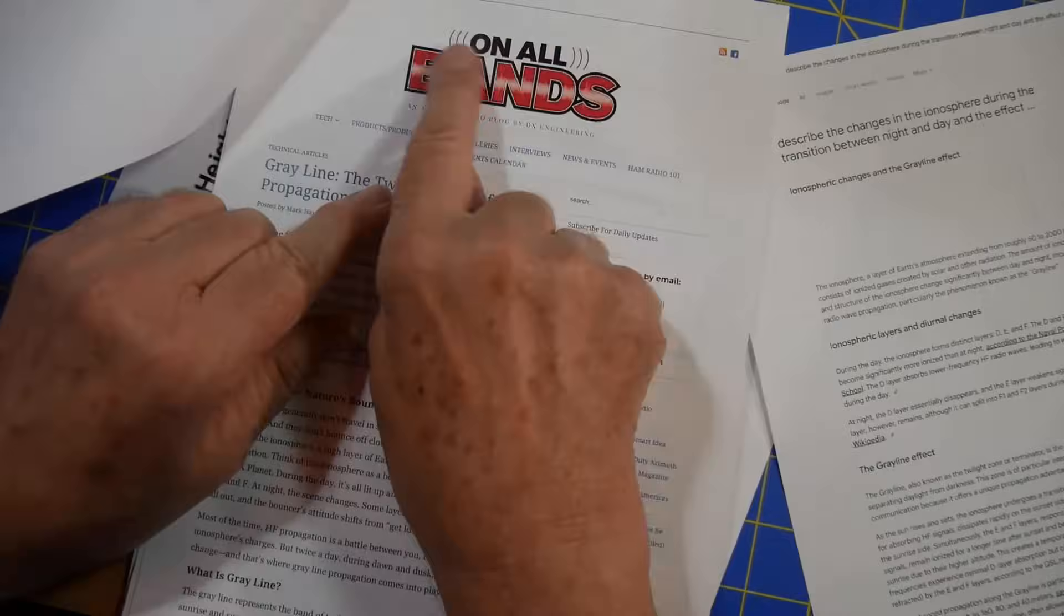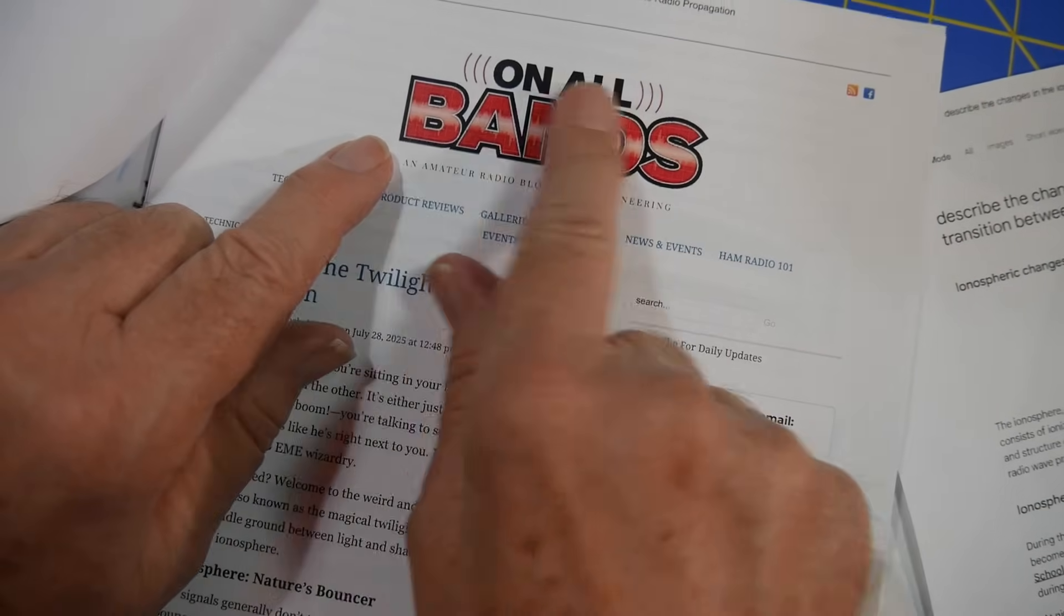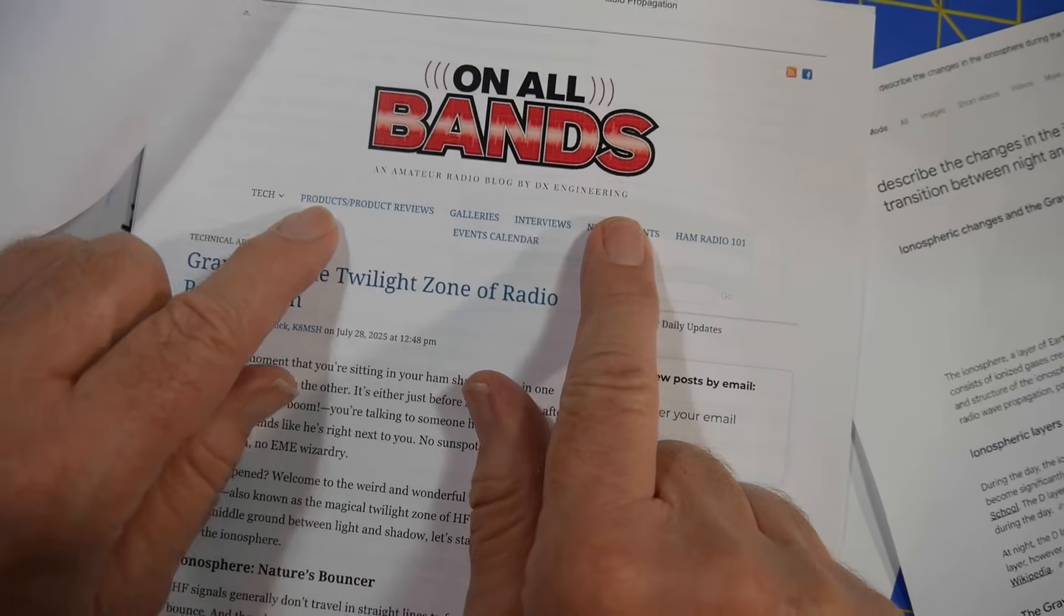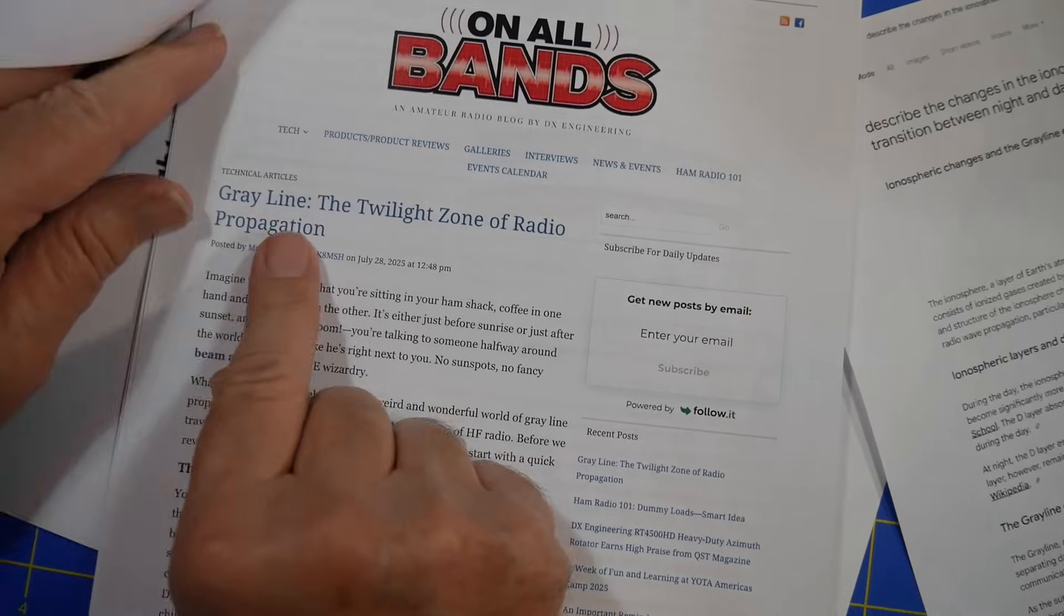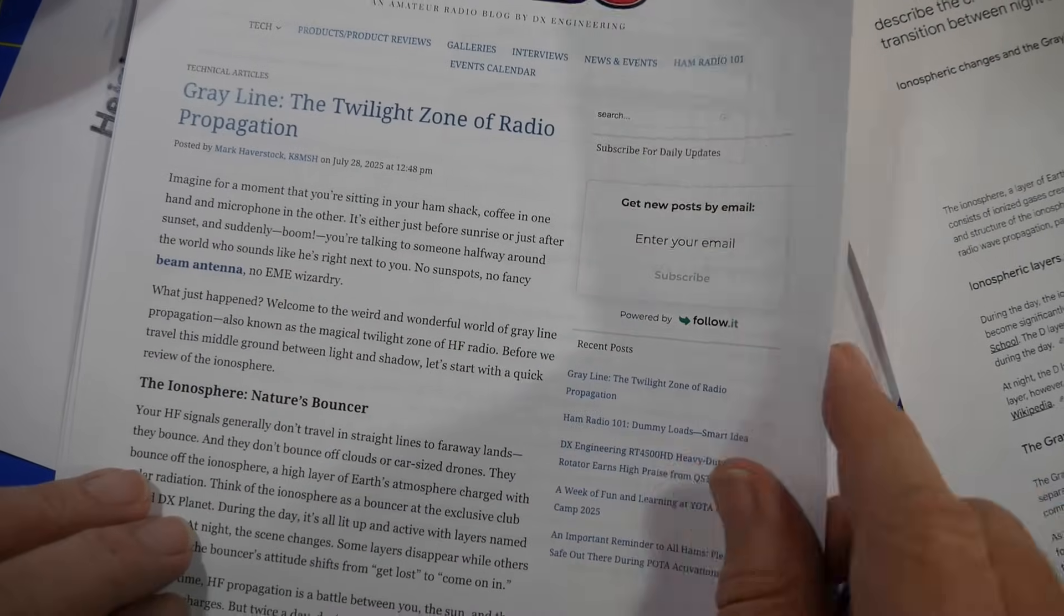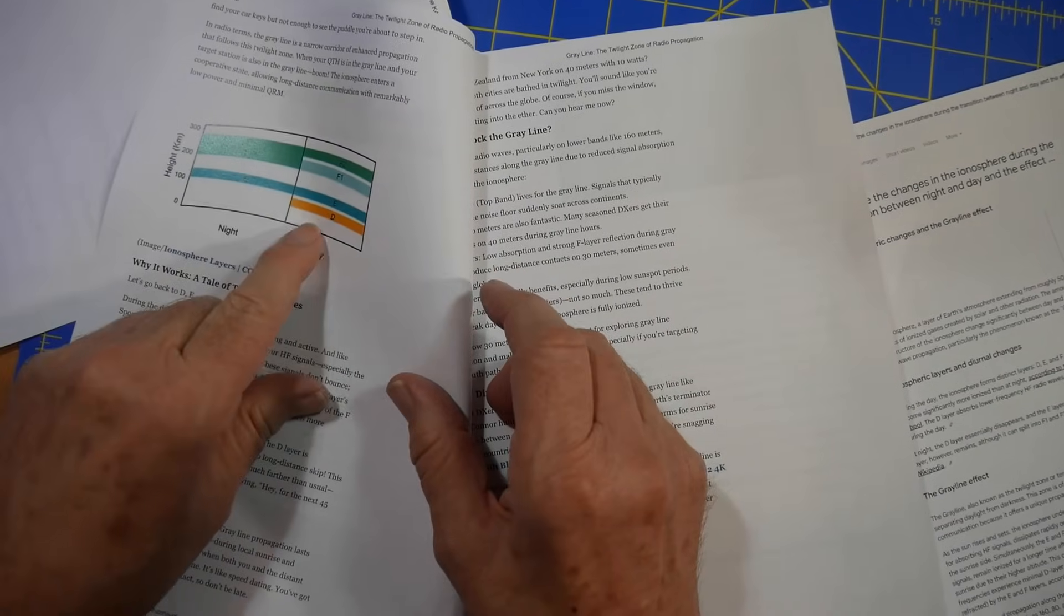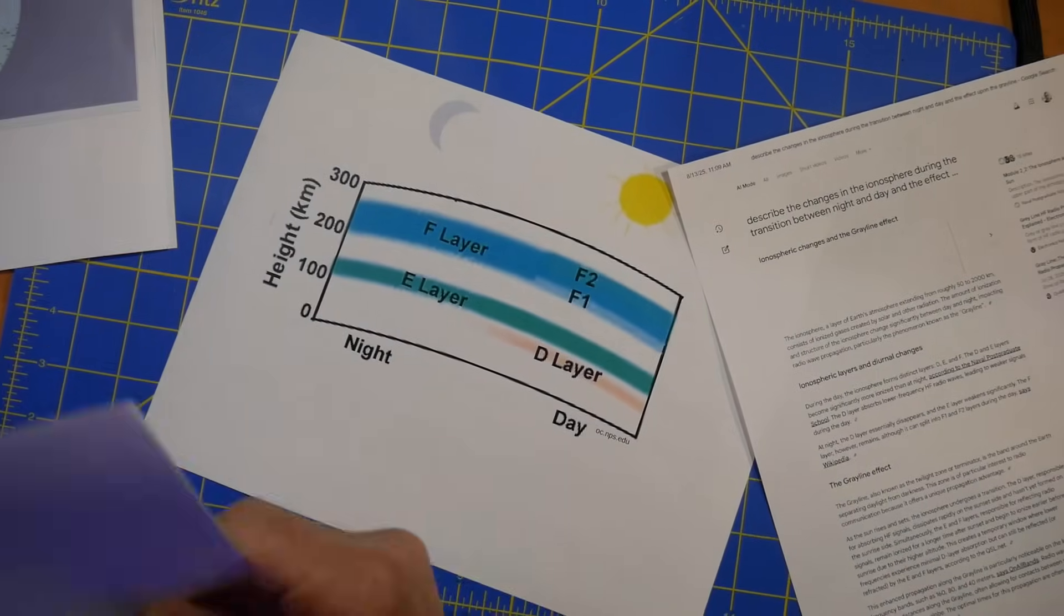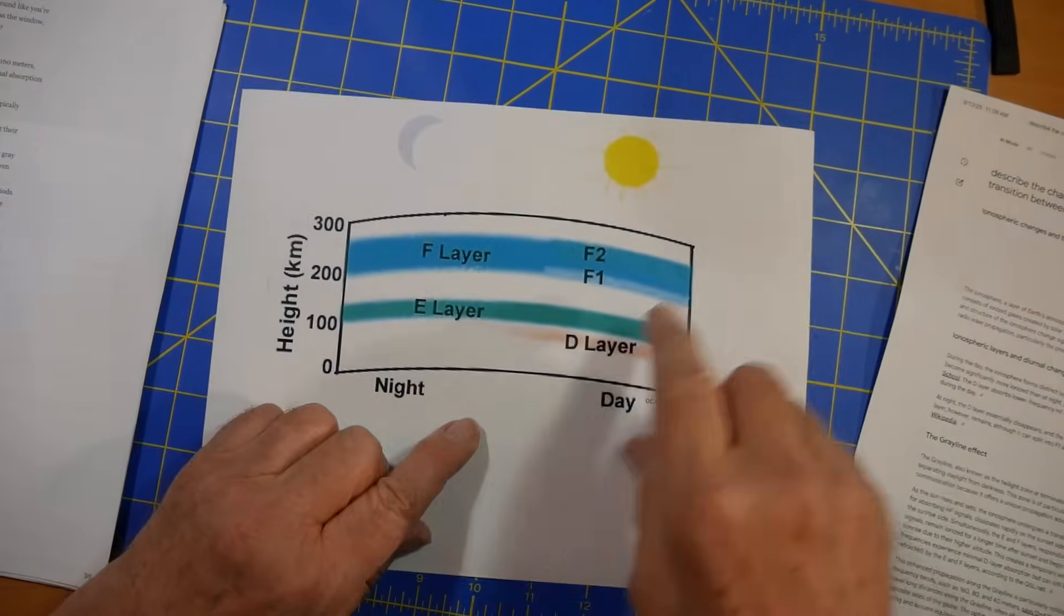Now, what happens here? DX Engineering has a blog called On All Bands, an amateur radio blog by DX Engineering. They put up a new post every business day. And this one's on the gray line, the twilight zone of amateur propagation. And they have a chart here that shows an immediate change between day and night. I'm going to use a slightly different diagram. I'm going to use this one right here.